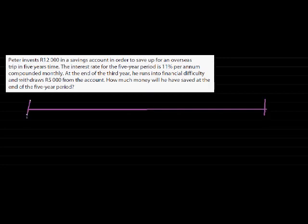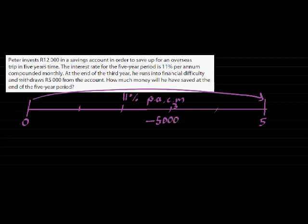Here's time after five years. Zero. Five. When does the change take place? Over this whole period, interest didn't change. So for the whole period, we get 11% per annum compounded monthly. However, at the end of the third year, so after three years, that is one, two, three. At the end of the third year, he withdraws $5,000. So we subtract $5,000 from his savings.